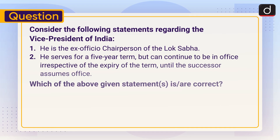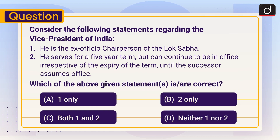Now it's time for the practice question. Consider the following statements regarding the Vice President of India: 1. He is the ex officio Chairperson of the Lok Sabha. 2. He serves for a five-year term but can continue to be in office irrespective of the expiry of the term until the successor assumes office. Which of the above statements is or are correct — one only, two only, both one and two, or neither one nor two? Send the answer in the comment section. Stay tuned for the next episode. Thanks for watching, have a great day.